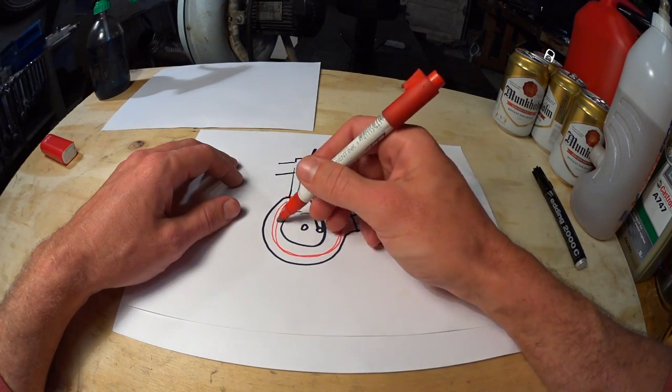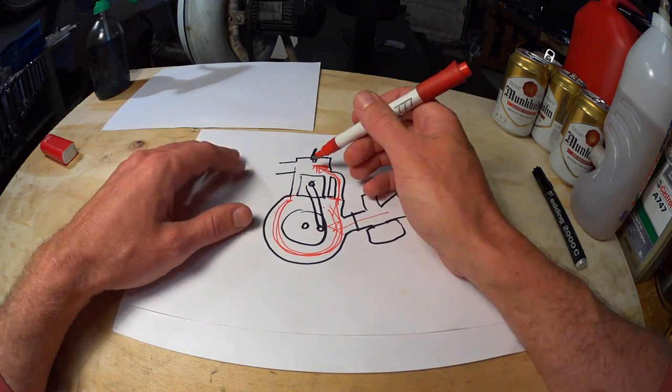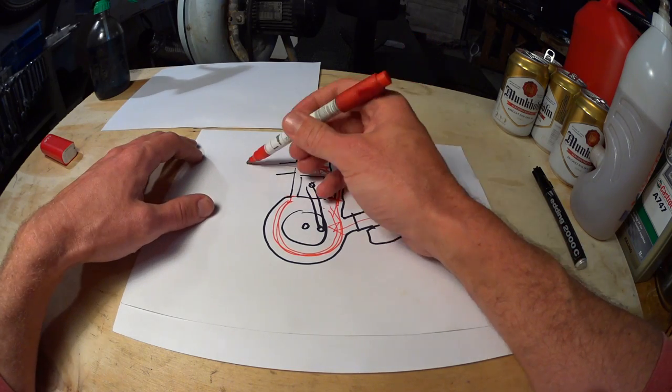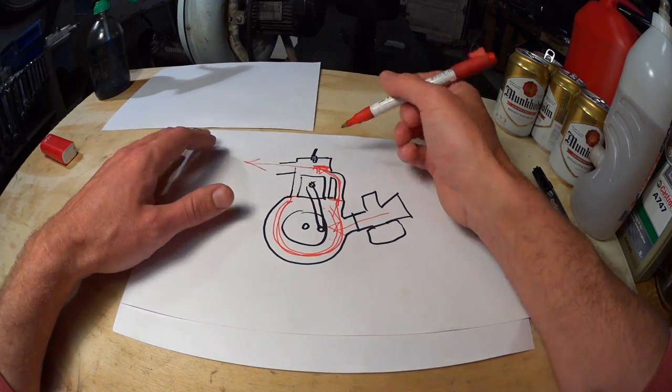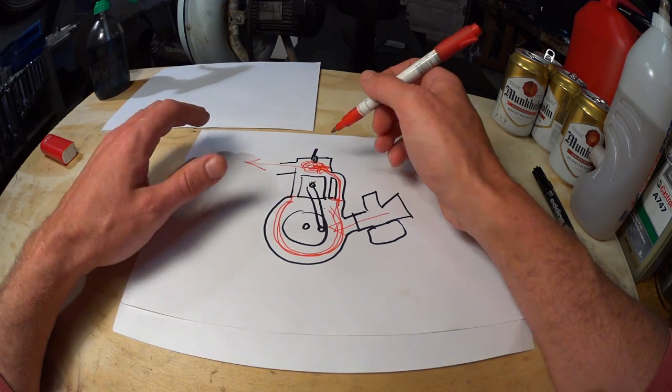When the initial pressure gets too high, the transfer ports lose control, and you get a lot of short-circuiting, which is the fresh mixture just hitting for the exhaust. And also a lot of mixing of the fresh with the spent gases.